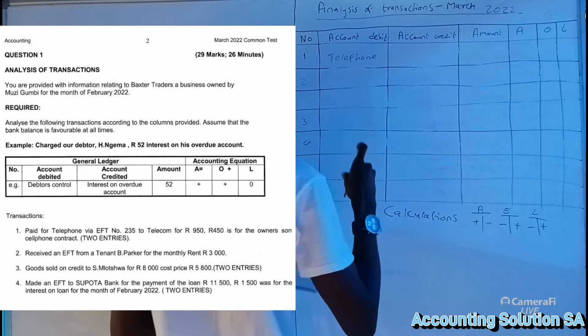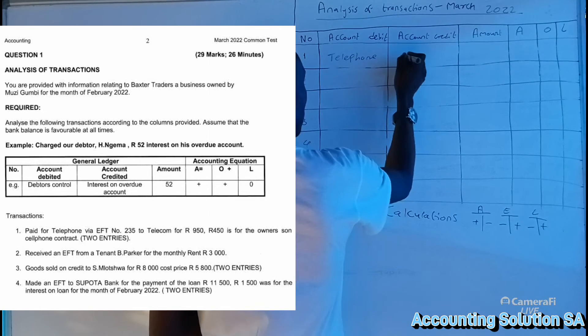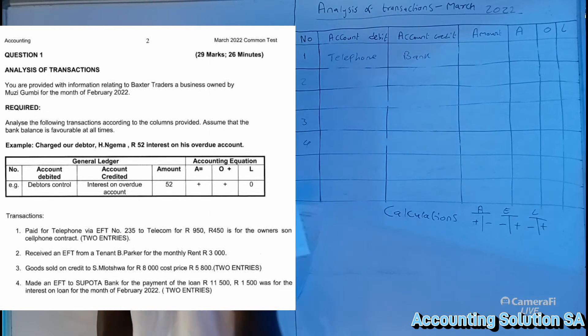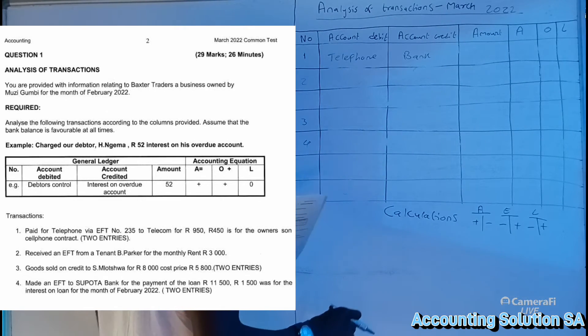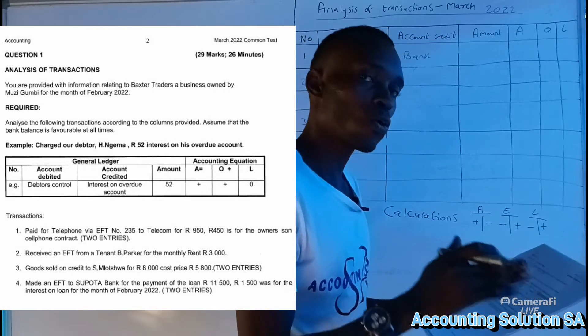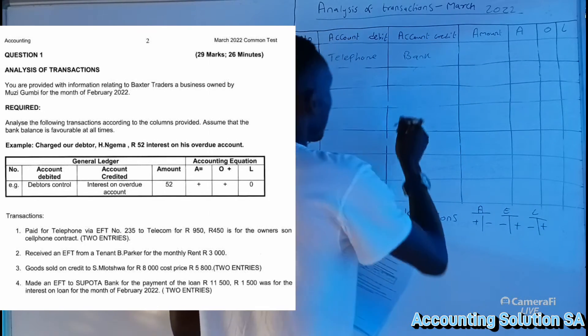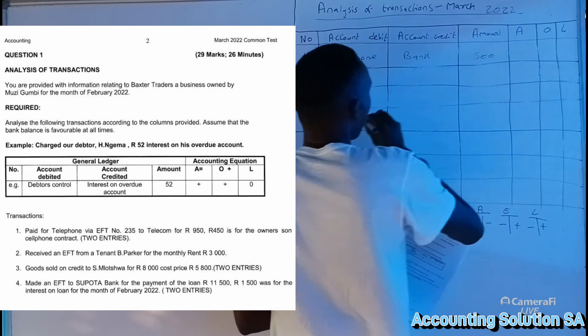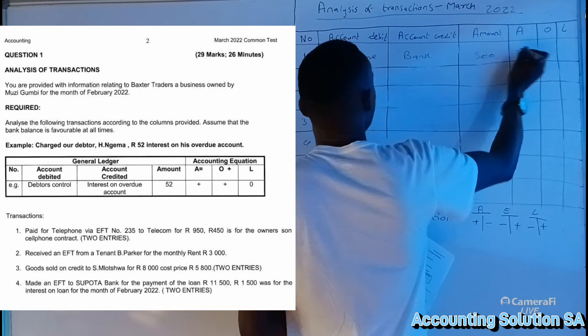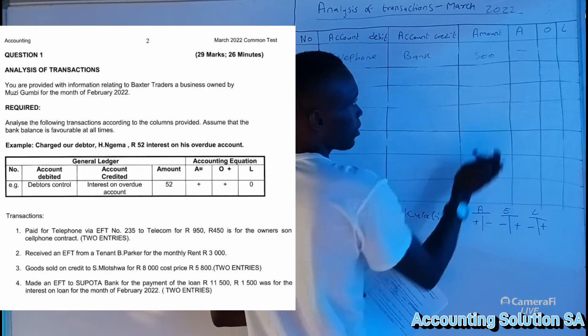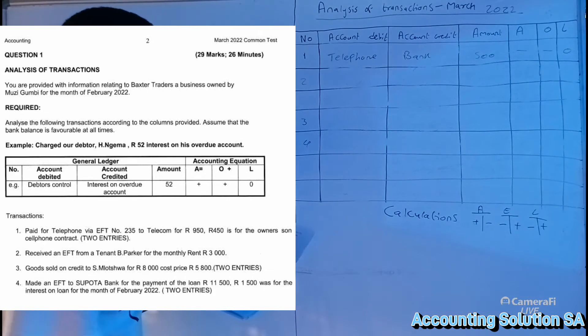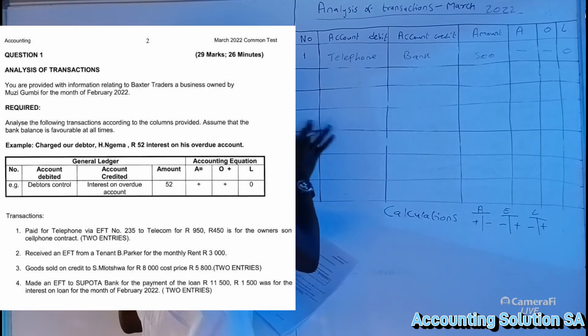Debit telephone and credit bank because it has been paid, which means that a bank has been affected. Then the amount, remember they paid 950, but from 950, 450 is for the owner's son, which means that for business is only 500. Bank is an asset which decreases on the credit side minus, and a telephone is an expense which is equity. It's going to be minus this side.